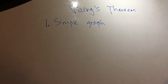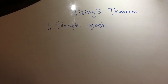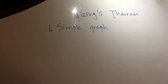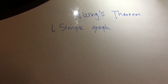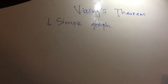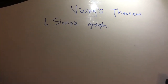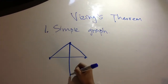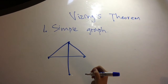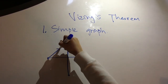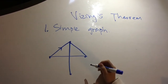The first term is simple graph. A simple graph is an unweighted and undirected graph with no graph loop and no multiple edges between two vertices. For example, this graph is a simple graph, but if we give the graph a direction, it is not a simple graph.